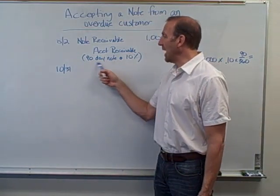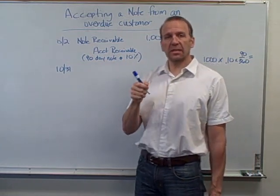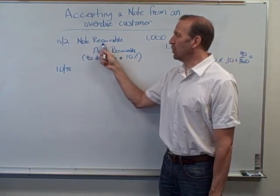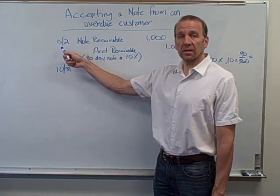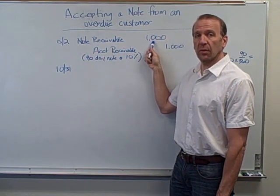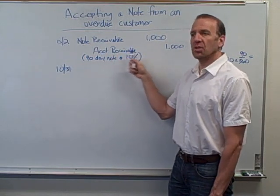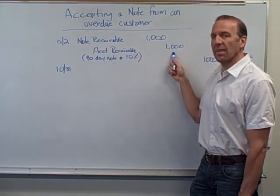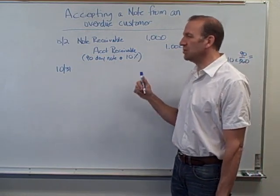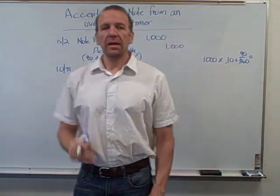They've agreed to pay us in 90 days and we'll earn 10 percent. To reclass this account receivable to note receivable, it's very simple. On August 2nd, we're going to debit the note receivable — that's an asset, which will increase it — to one thousand dollars. Then we're going to eliminate the account receivable by crediting it one thousand dollars. This establishes the note receivable and removes the account receivable from the books.